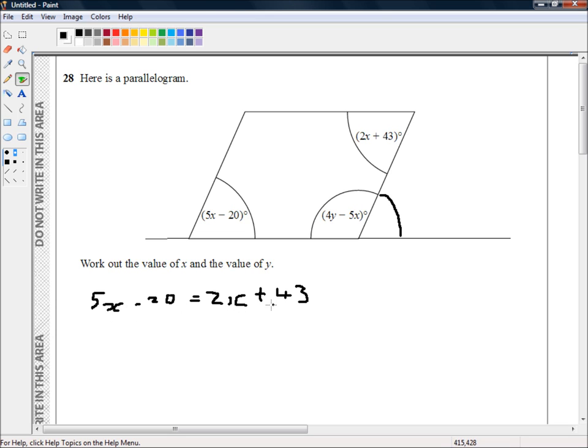Let's just manipulate this a little bit algebraically and get all the x terms on the left and all the number terms on the right. So we've got 5x. I'm subtracting 2x from both sides, and I'm going to add 20 to both sides. So that means if we combine these terms, that makes 3x is equal to 63.